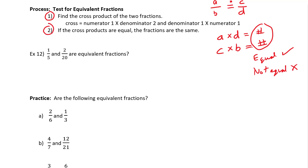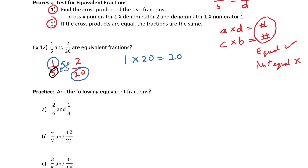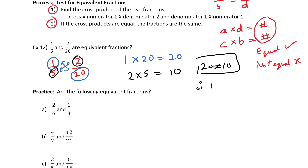Let's try that now with example 1 over 5 and 2 over 20. We write down the fractions and draw arrows to show the cross multiplication. 1 times 20 equals 20. Then we take the denominator on one and the numerator on the other: 2 times 5 equals 10. Since 20 is not equal to 10, therefore they are not equivalent fractions.